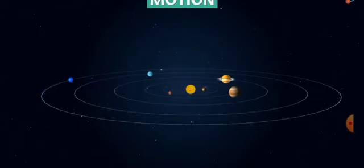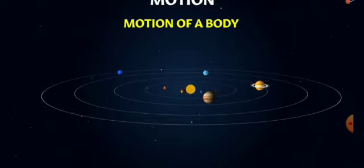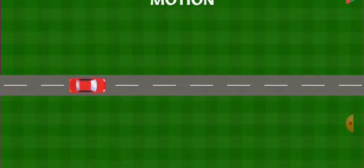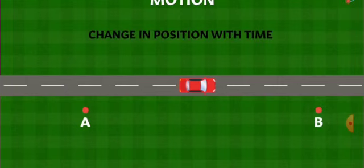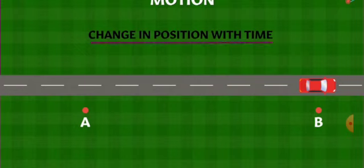So what do you mean by motion? Motion you can understand by these activities. Here a car is moving from point A to point B, so there is a change in position with time, and this change in position with time is known as motion. So motion is a change in position with time.